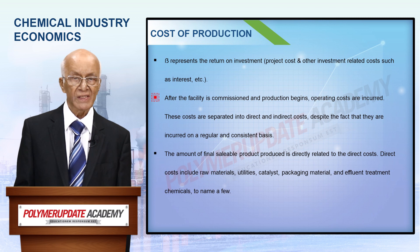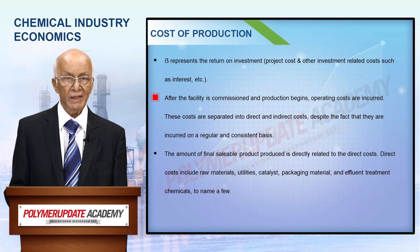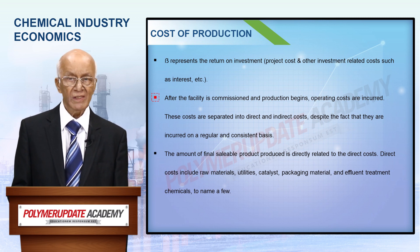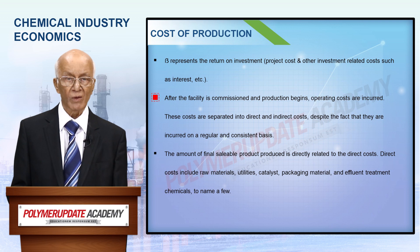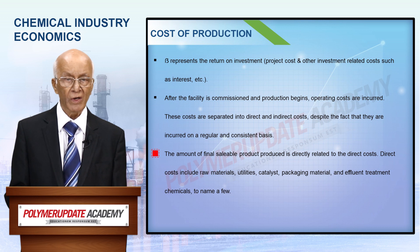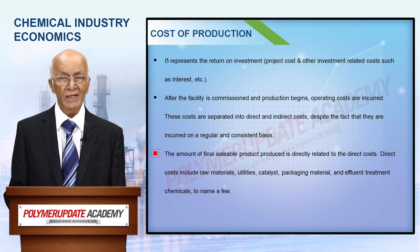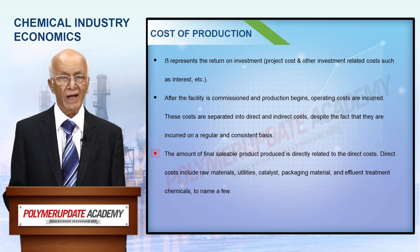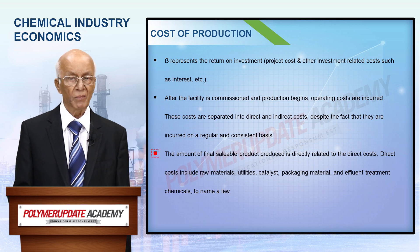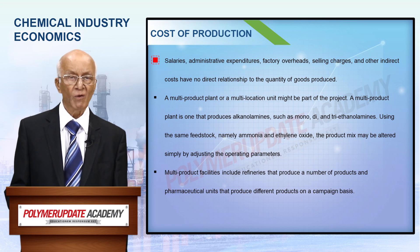Operating expenses are incurred after the plant is commissioned and production begins. These expenses, though incurred regularly and repeatedly, are divided into direct and indirect costs. The direct costs have a direct bearing in relation to the quantity of finished sellable product produced. Raw materials, utilities, catalysts, packing material, and effluent treatment chemicals are examples of direct costs. Indirect costs are salaries, administrative costs, factory overhead, selling expenses, etc.